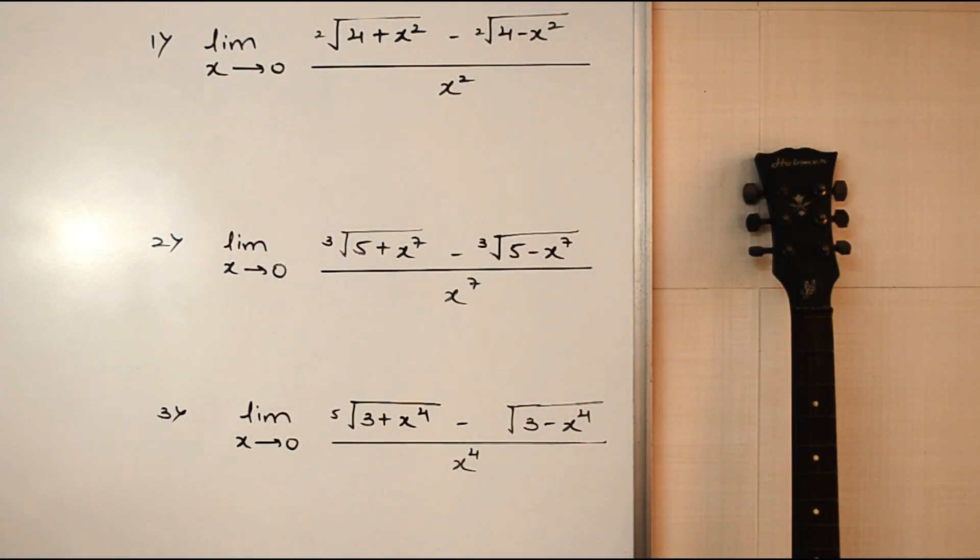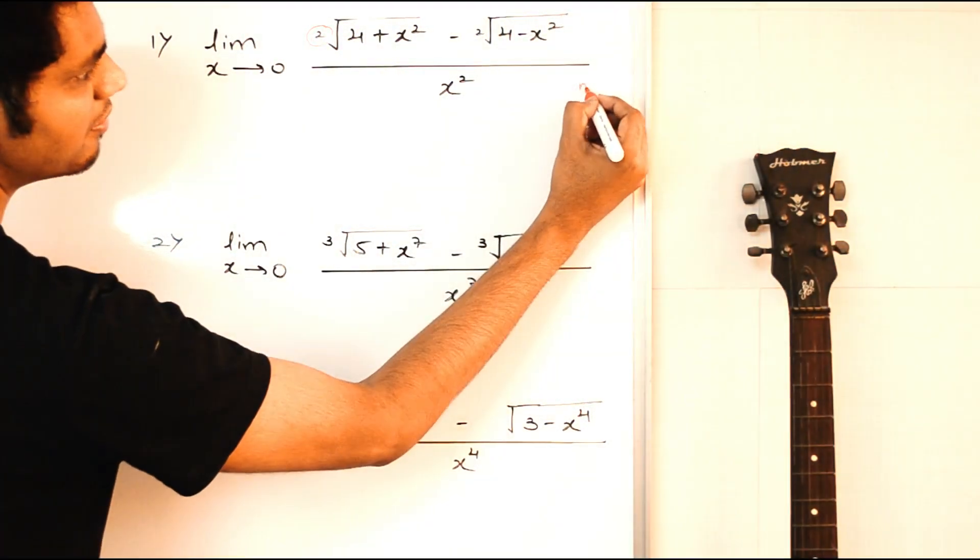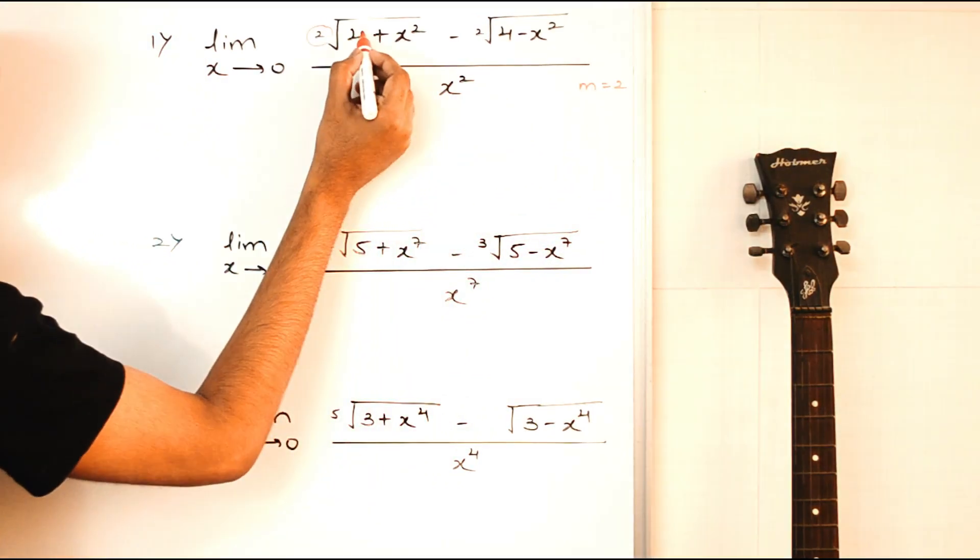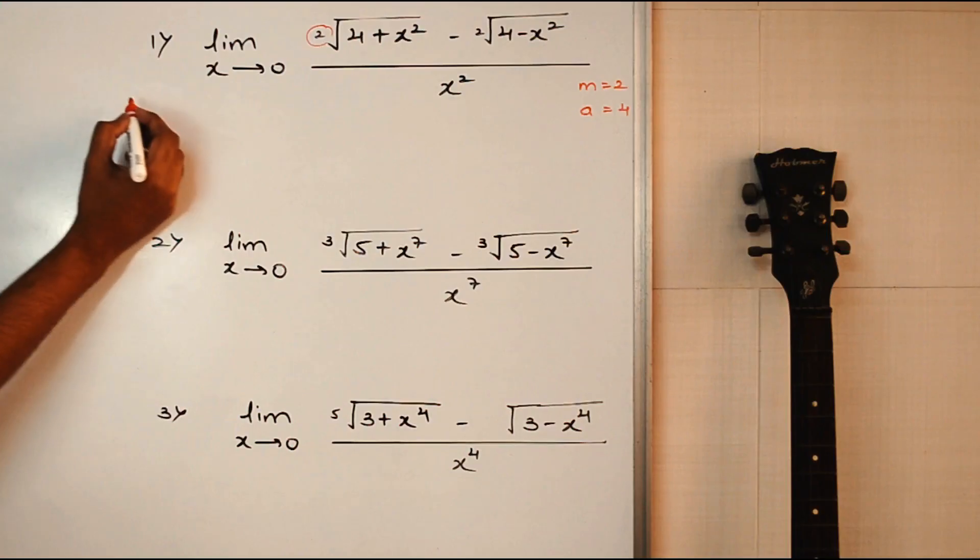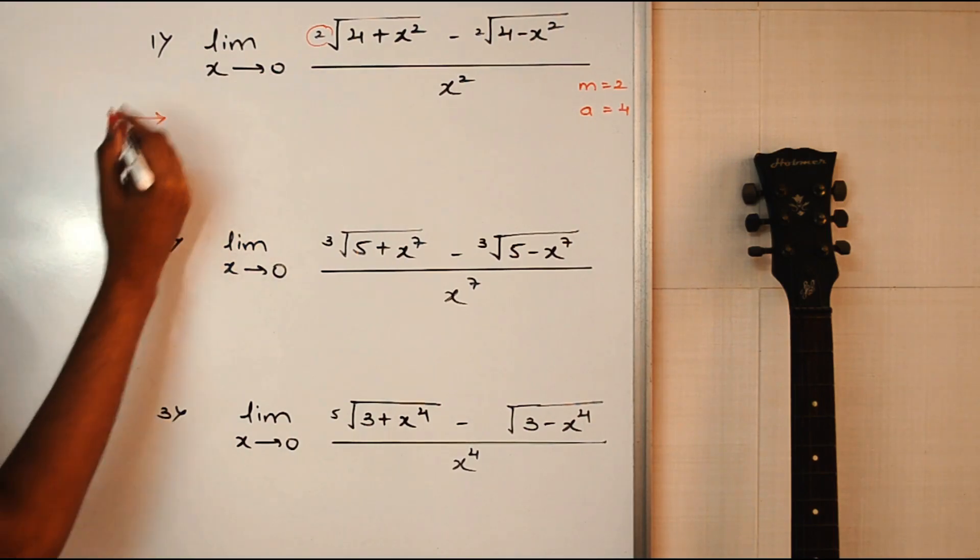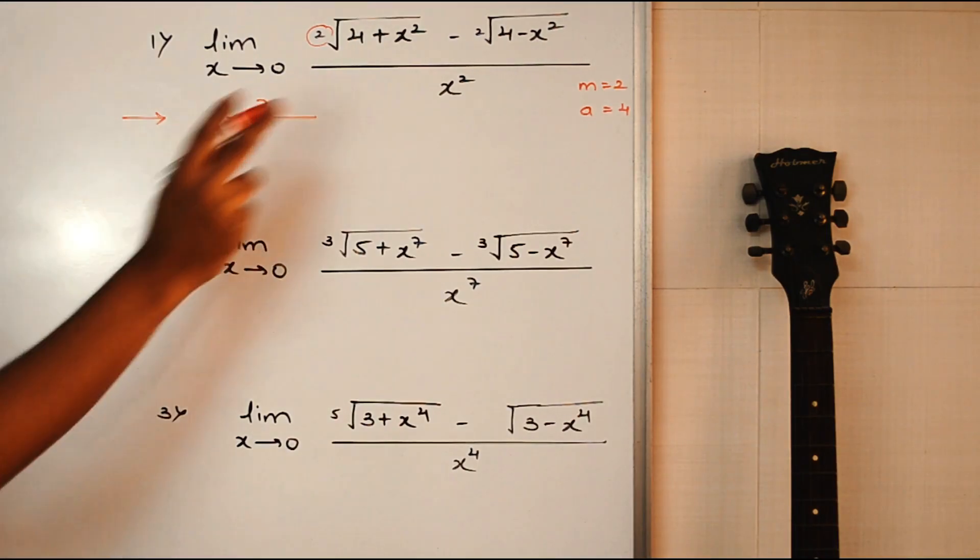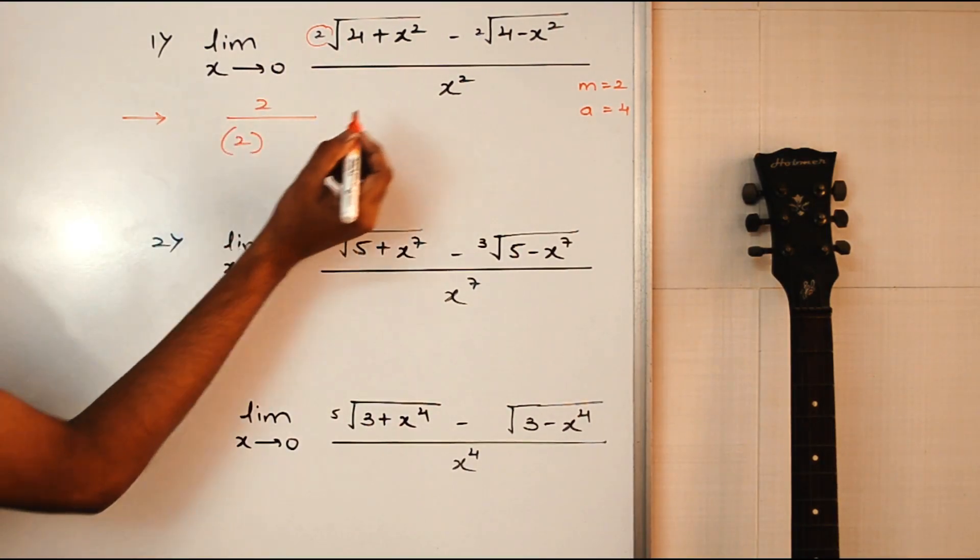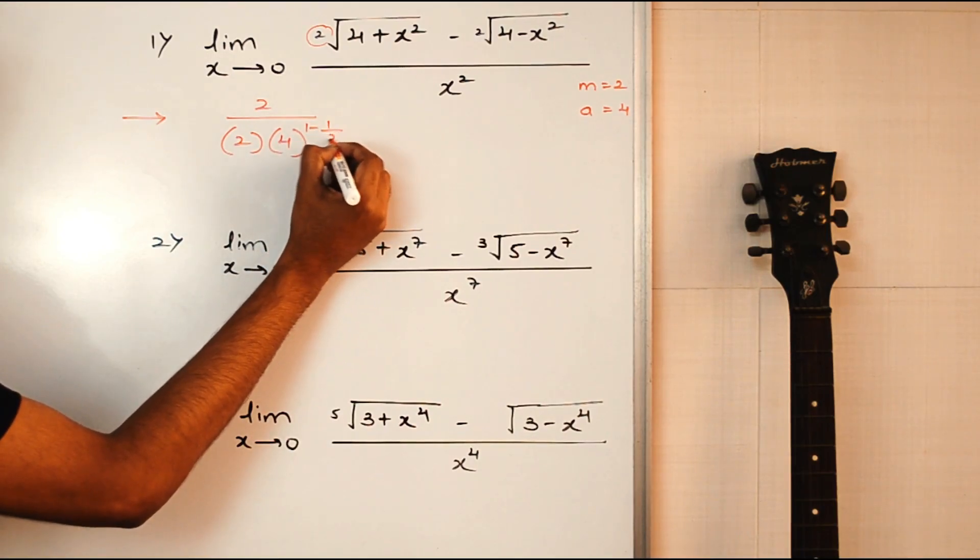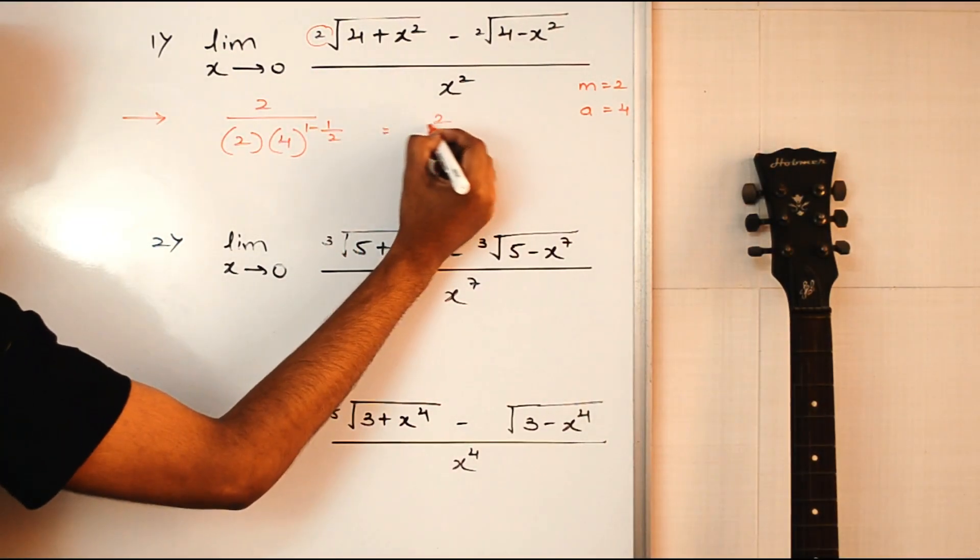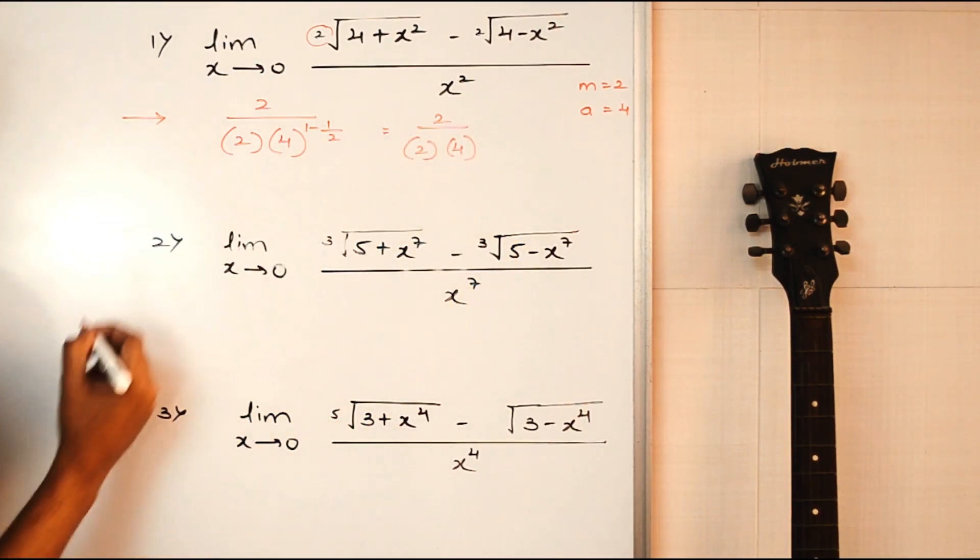Alright, so here we go. For the first one, the m value is 2 and the a value is 4. As per the formula, the answer will be 2 upon m into a raised to 1 minus 1 by m. So, m is 2, a is 4, raised to 1 minus 1 by 2, which is 1 by 2.